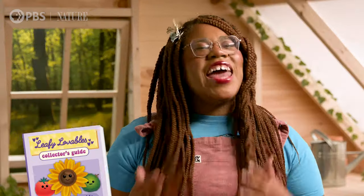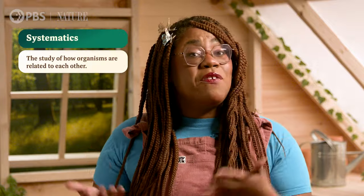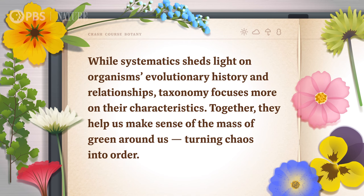Like any serious Leafy Lovables fanatic, you have a special collector's guide to help keep tabs on your collection — where you got them, when each one was released, and which ones have been discontinued. You might even hit up a collector's fair to see how your Leafy Lovables fit into the bigger history of collectible things, from Beanie Babies and Squish Mallows to baseball cards and rare coins. That's kind of like Systematics, the study of how organisms are related to each other. Systematics involves studying connections between organisms alive today and those that have been extinct for millions of years. While systematics sheds light on organisms' evolutionary history and relationships, taxonomy focuses more on their characteristics. Together, they help us make sense of the mass of green around us, turning chaos into order.